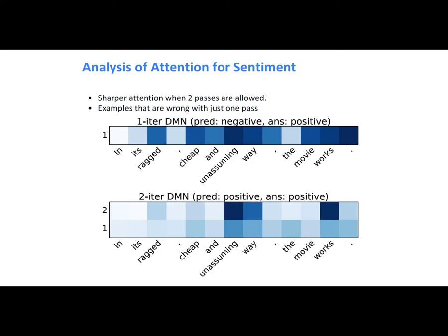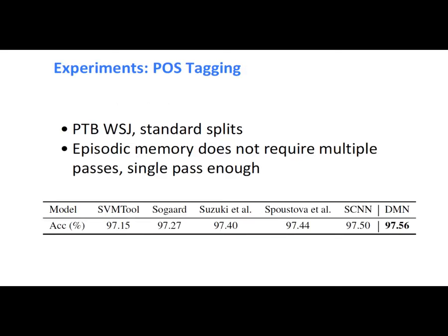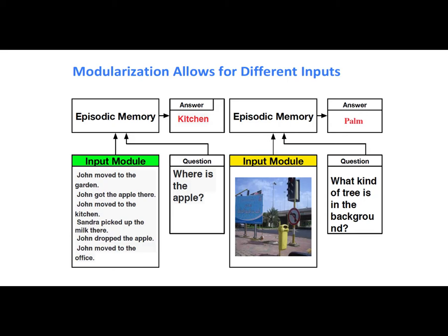For sentiment analysis, using one iteration the model performs poorly, but with the second iteration it predicts well. The DMN also does well on POS tagging. Because DMN has four separate modules that can work independently, the input module can take both text and images — as long as it outputs a representation of the input.